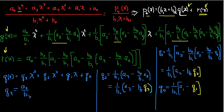Now notice that q₂, the coefficient of x², involves the term a₄/b₁ — which is exactly q₃. So I can write q₂ as (1/b₁)·(a₃ − b₀·q₃). That is, q₂ is expressed in terms of some constants and the previously computed coefficient q₃.